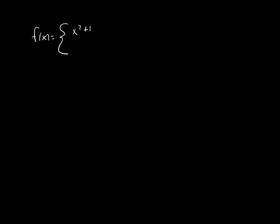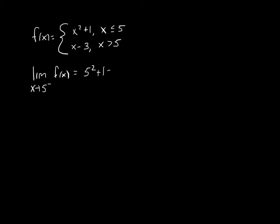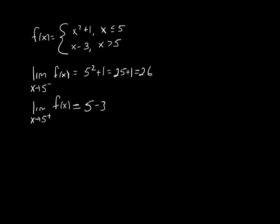What if you're not given a graph? Let's say you're given the equation of a piecewise function and we'd like to know about the limit as x approaches 5. We need to know what's happening to the left and to the right. The limit as x approaches 5 from the left — from the left of 5, those would be values less than 5, so we're looking at x squared plus 1, the parabolic part of the equation. That would be 25 plus 1, which is 26. From the right side, that would be for x values greater than 5, the linear part of our function, so f of x is approaching 5 minus 3, which is 2.